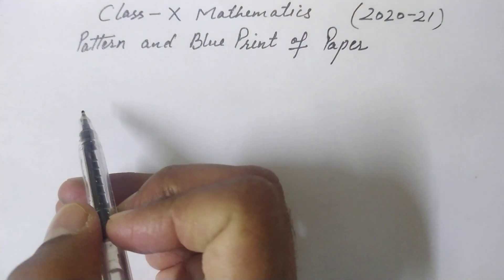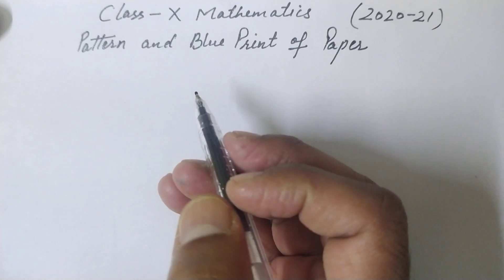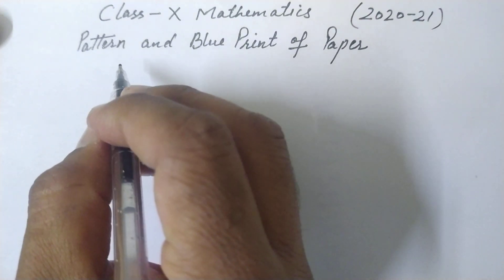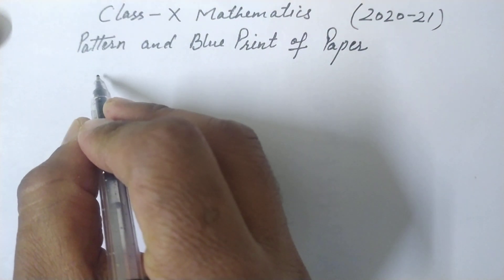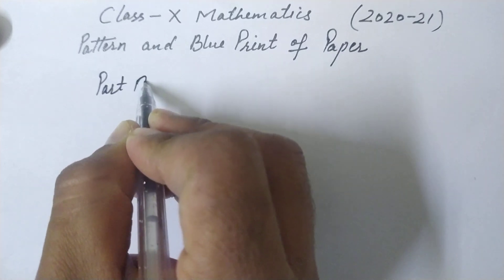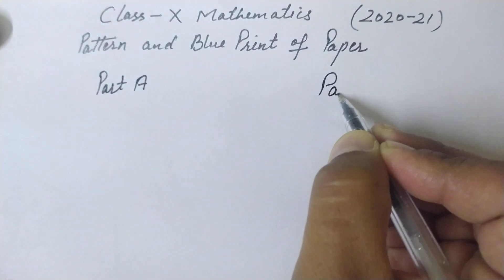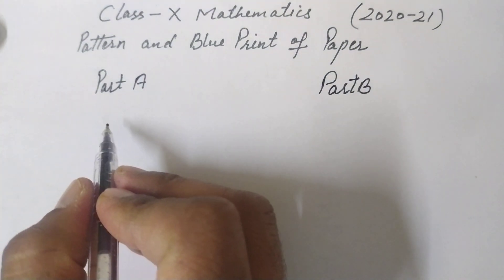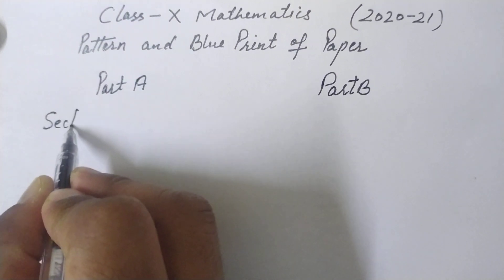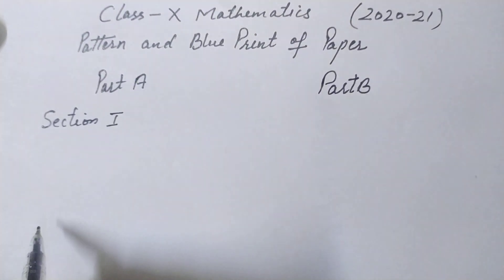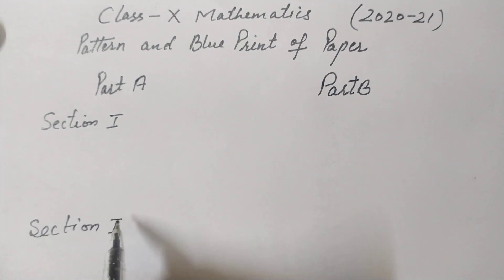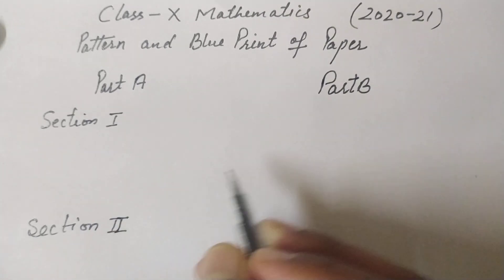First, this paper will be of three hours duration and maximum marks will be 80. The paper is divided into two parts: Part A and Part B. Part A has two sections — Section 1 and Section 2 — and Part B is separate.